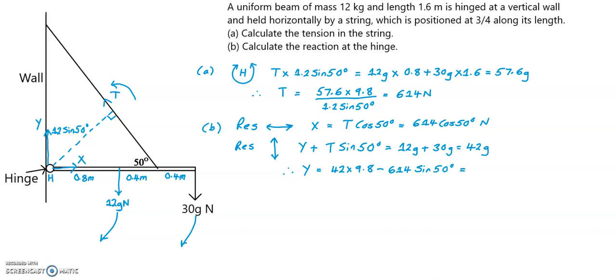Therefore Y equals 42g, so 42 times 9.8, minus T sin 50, so 614 sin 50 degrees. And this gives an answer for Y of minus 58.8 Newtons. Now because Y has given a negative value, instead of acting upwards, Y is actually acting downwards with a magnitude of 58.8 Newtons.